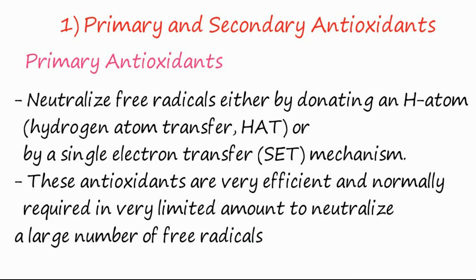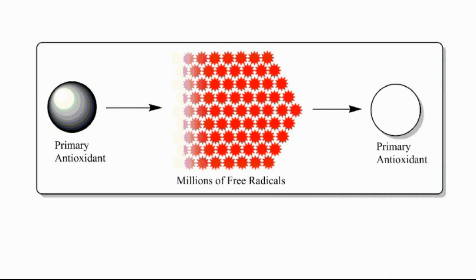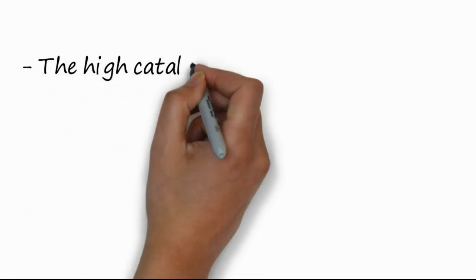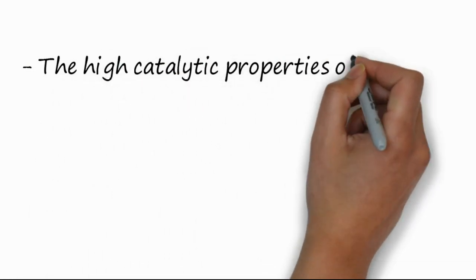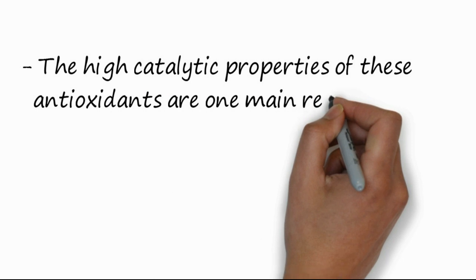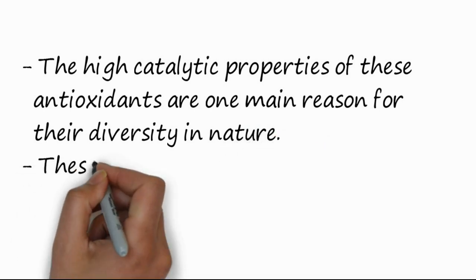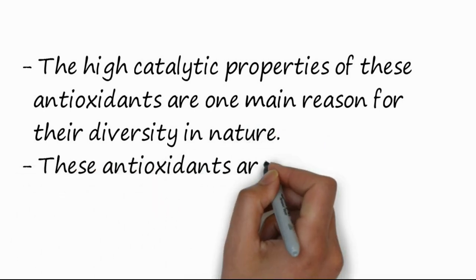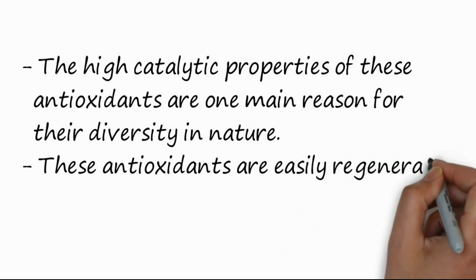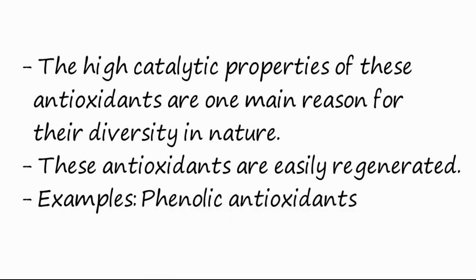You can see here that a single primary antioxidant can react with millions of free radicals to form a stable radical. The high catalytic properties of these antioxidants are one main reason for their diversity in nature. These antioxidants are also easily regenerated, which is another important property.